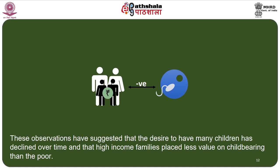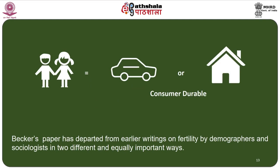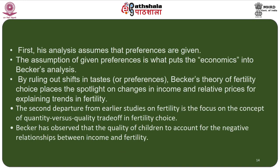These observations suggested that the desire to have many children had declined over time and that high-income families place less value on childbearing than the poor. Gary Becker, in his seminal 1960 paper on the theory of fertility choice, considered children as consumer durables like cars or houses. His paper departed from earlier writings by demographers and sociologists in two important ways: first, his analysis assumes that preferences are given — the assumption of given preferences is what puts the economics into Becker's analysis.